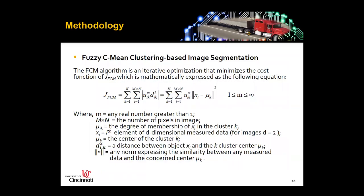The fuzzy C-means clustering is used to carry out the segmentation. This slide shows the equation for the cost function J-FCM, which is mathematically expressed by this equation. This can be viewed as the optimization objective because the FCM algorithm uses iterative calculation with an optimization objective. It contains the measurement of the distance of any pixel to the defined center of the clusters.